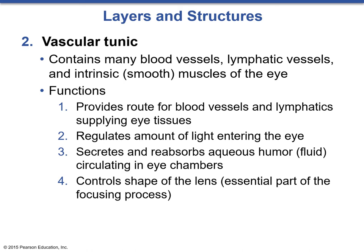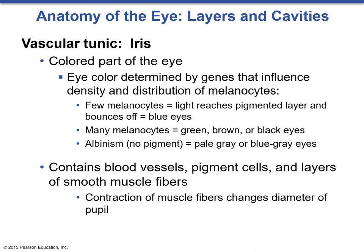There are three major components of the vascular tunic. The first is the iris, the colored part of the eye. Eye color is determined by genes that influence the density and distribution of melanocytes — pigment cells also found in skin. With just a few melanocytes, light reaches the pigment layer and bounces off, giving blue eyes. With many melanocytes in different quantities, you could get green, brown, hazel, or even black eyes. In some cases there is no pigment at all — this is albinism — resulting in pale gray or blue-gray eyes, and in some cases pink, where blood vessels show through.